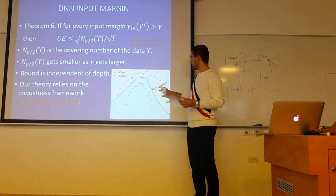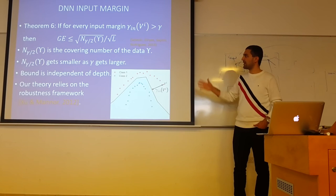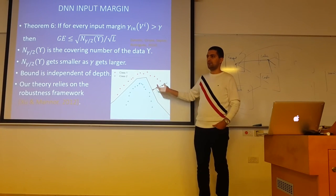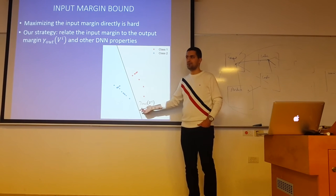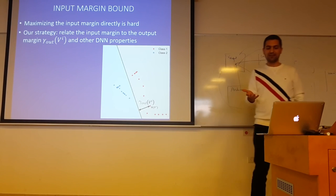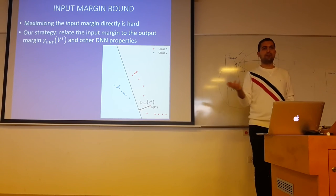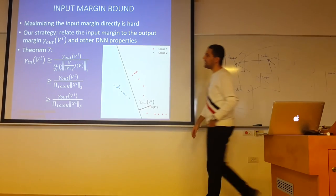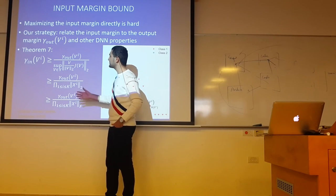One may suggest maximizing the input margin as a regularization strategy. However, maximizing the input margin is a hard problem. What people usually do is maximize the output margin — as in SVM, where you use the kernel to maximize the output margin, and many cost functions like the hinge loss do this. So we bound the input margin as a function of the output margin and other network parameters, which helps us regularize the network better. We get a series of lower bounds on the input margin.